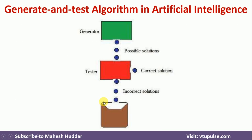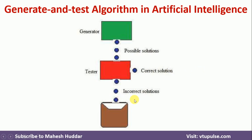This can be shown with a simple pictorial diagram. There are two things: one is the generator and the second one is the tester. The generator will generate all possible solutions. The tester will test whether the generated solutions are acceptable or not acceptable. If it is acceptable, it will be given as a final solution. Otherwise, if it is not acceptable, it will be put into incorrect solutions.